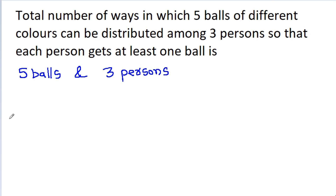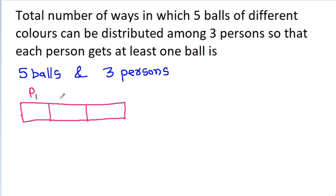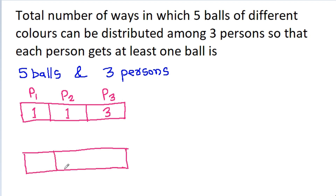Case 1: we have 3 persons — person 1, person 2, and person 3 — and we give 1 ball to person 1, 1 ball to person 2, and 3 balls to person 3. Case 2: we give 1 ball to person 1, 2 balls to person 2, and 2 balls to person 3. There are only 2 possible cases.